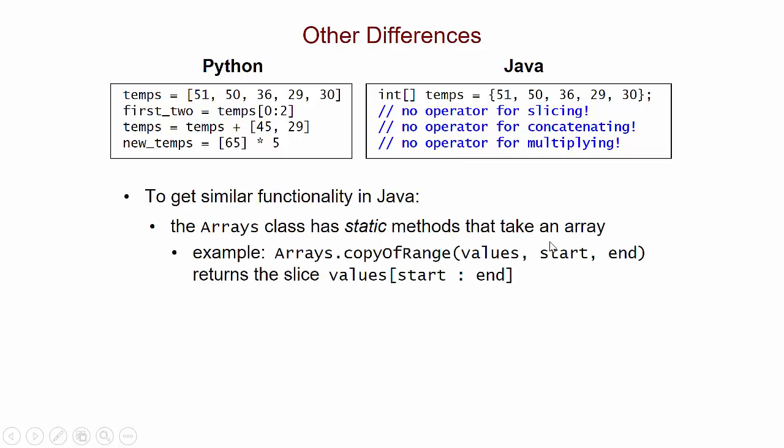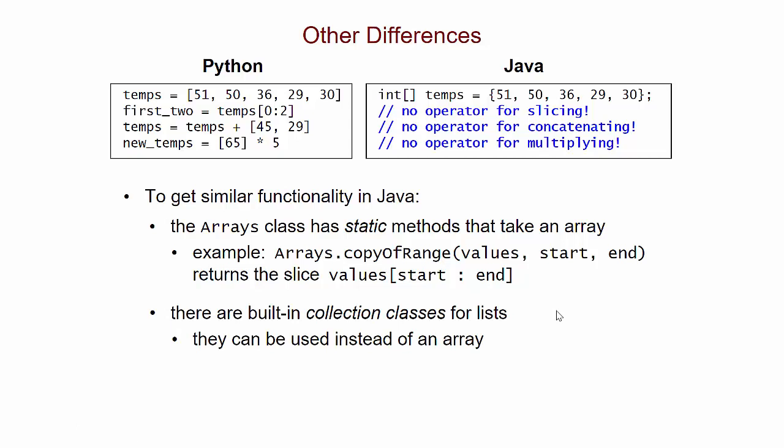If we want to get some of that same functionality, we could in theory use static methods that are in the built-in Arrays class that we discussed in the previous video. So for example, Arrays.copyOfRange allows us to do slicing. But the more common thing would be to use one of the built-in collection classes for lists that come with Java. We can use one of those collection classes instead of an array if we really need a lot of this special functionality.